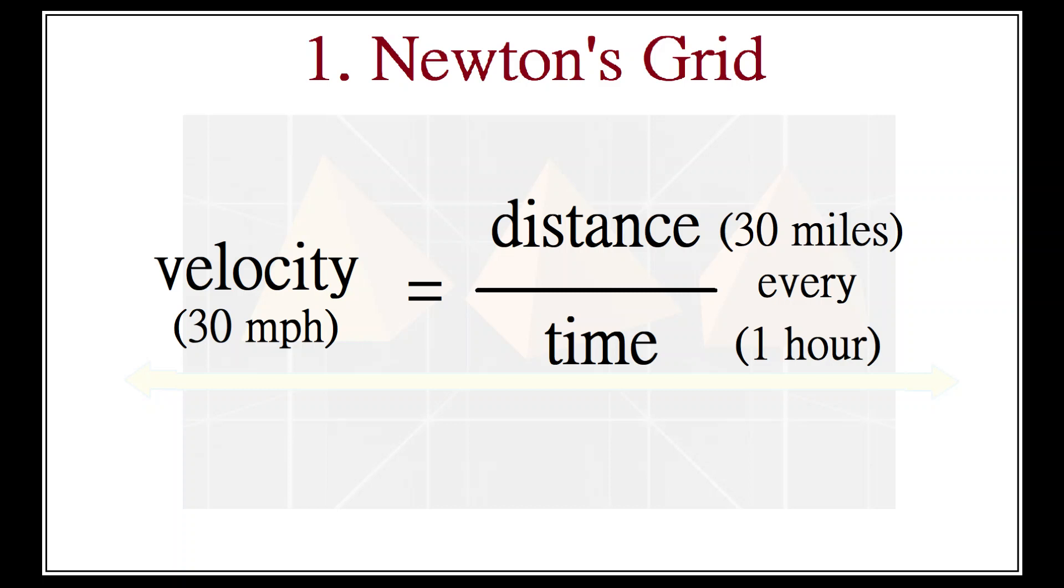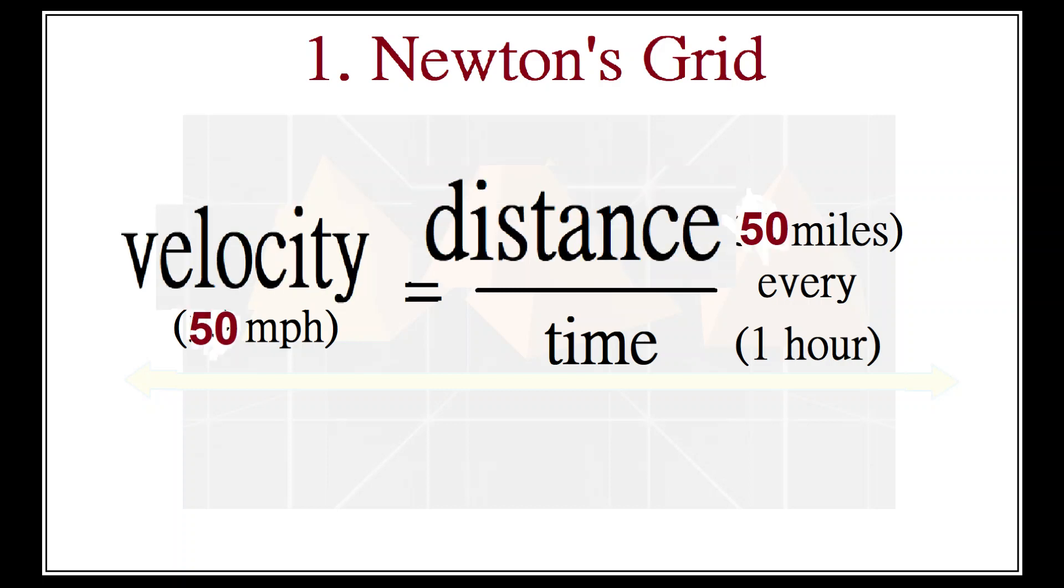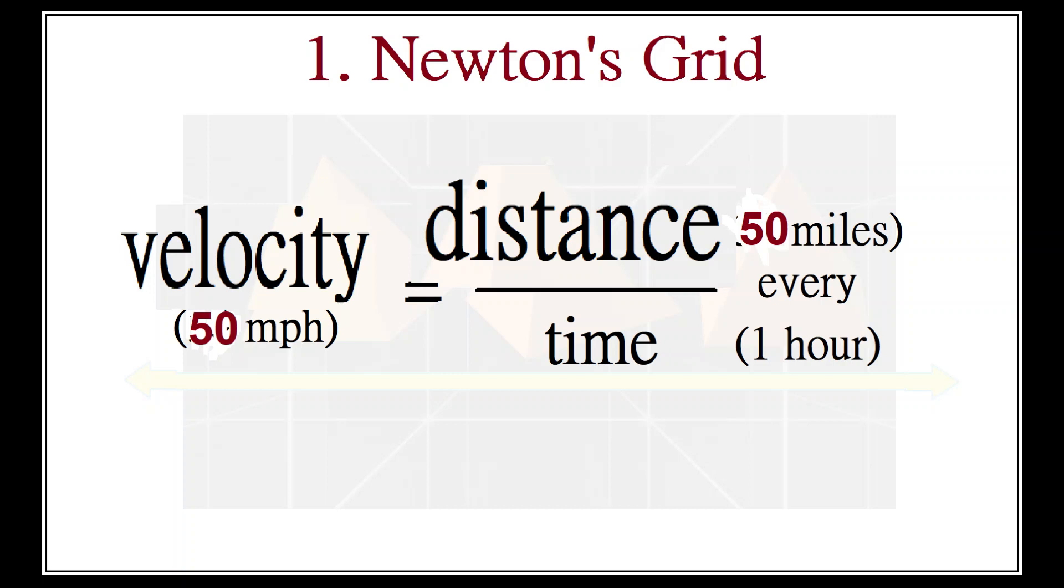To change one's velocity, i.e., to speed up or slow down, one must change this ratio between space and time, i.e., one must increase the length of space one travels within a given length of time. This is called acceleration, or deceleration.